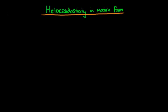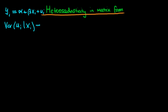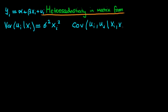We're going to assume a simple model: yi = α + β·xi + ui. We assume heteroscedasticity of the form Var(ui | xi) = σ²·xi², meaning the variance depends on xi. We still assume no autocorrelation, i.e., Cov(ui, uj | xi, xj) = 0 when i ≠ j.